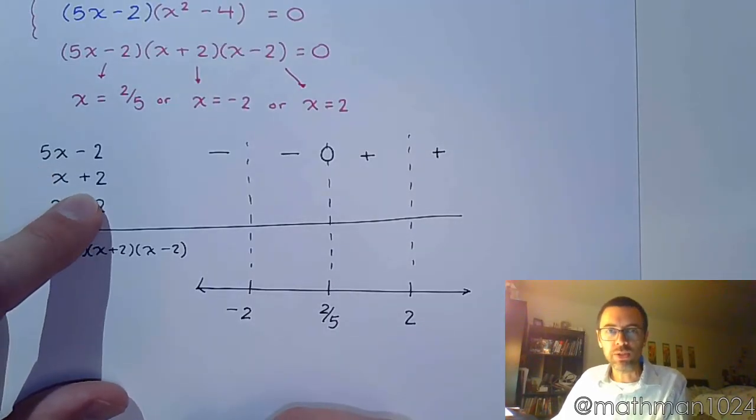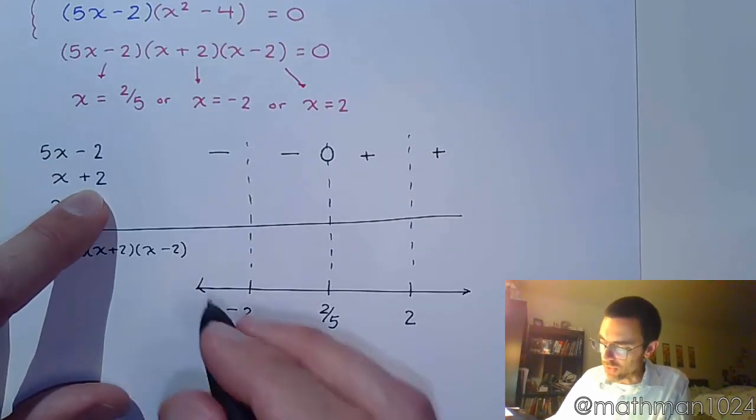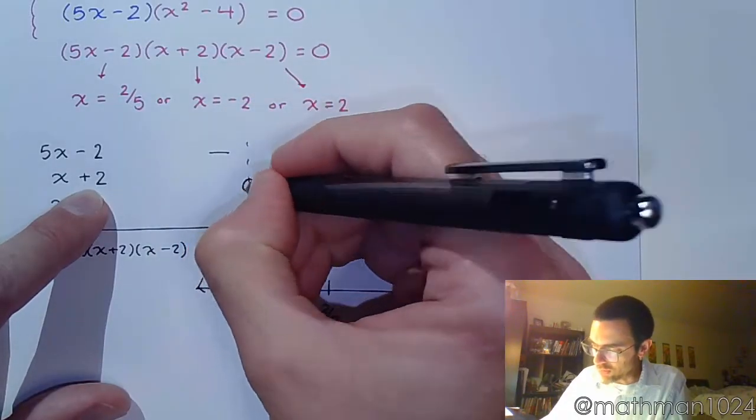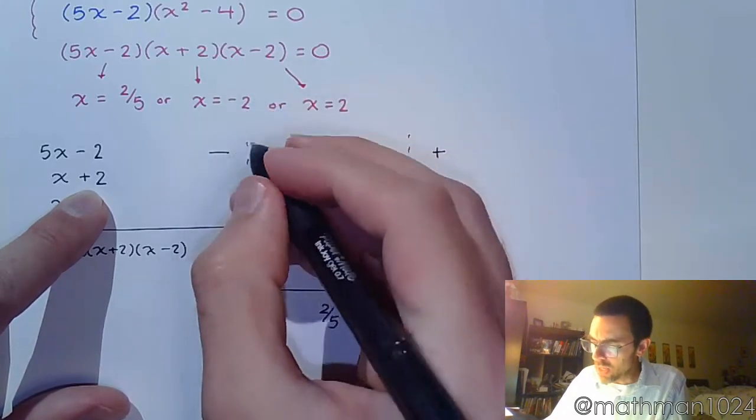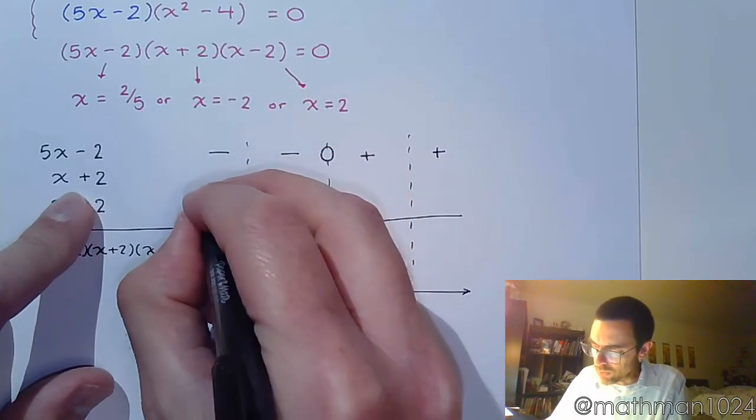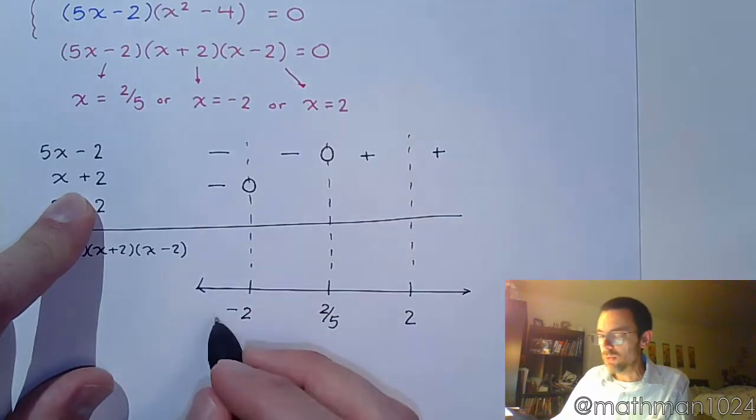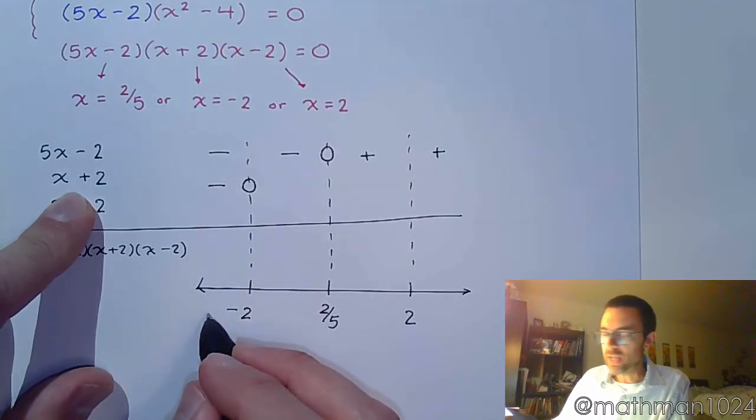Then we move on to x + 2. His critical value is negative 2. In fact, the reason we have negative 2 is because we set x + 2 equal to 0, right? So this factor will give you negative values for anything you plug in that's less than negative 2.